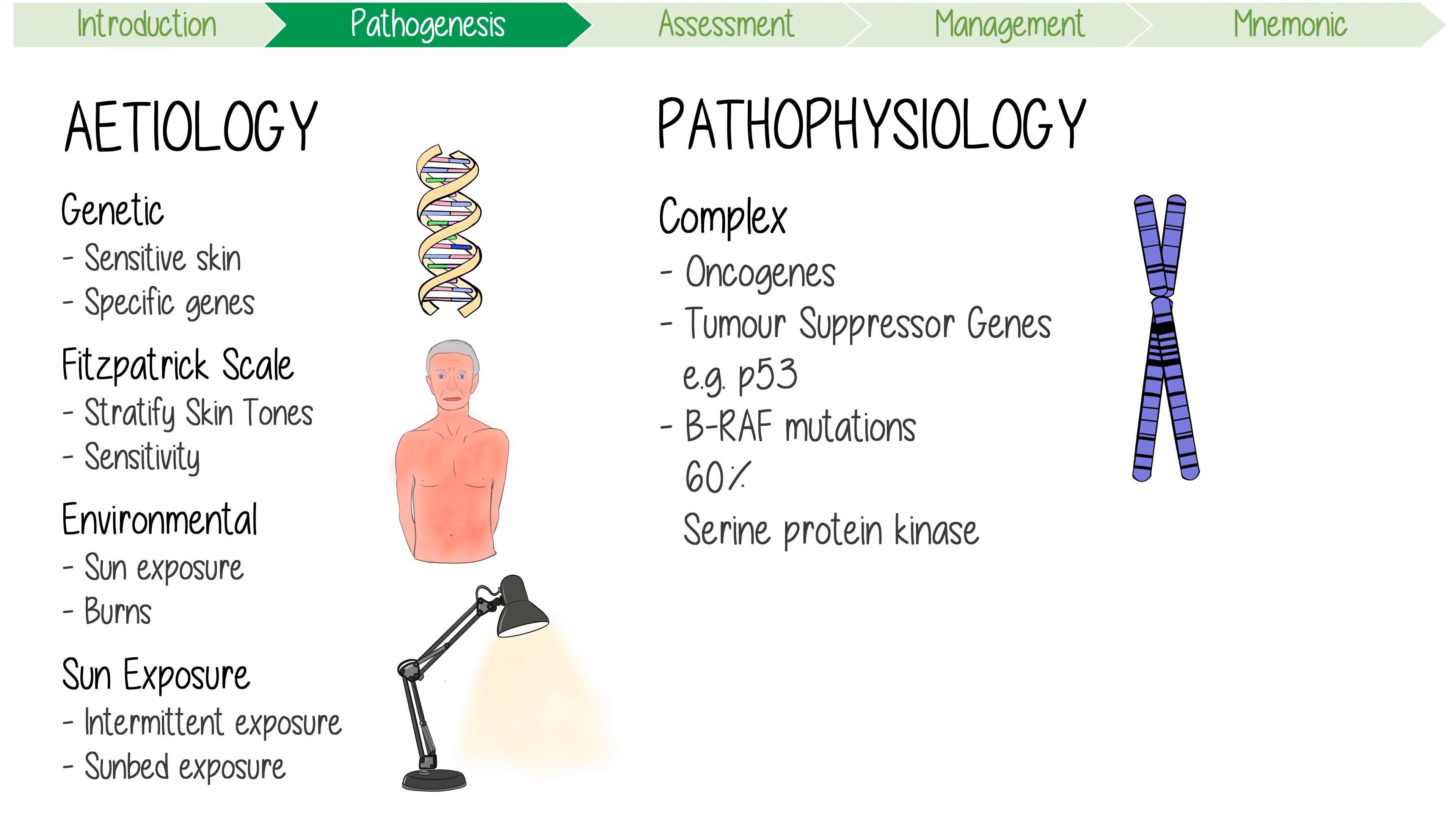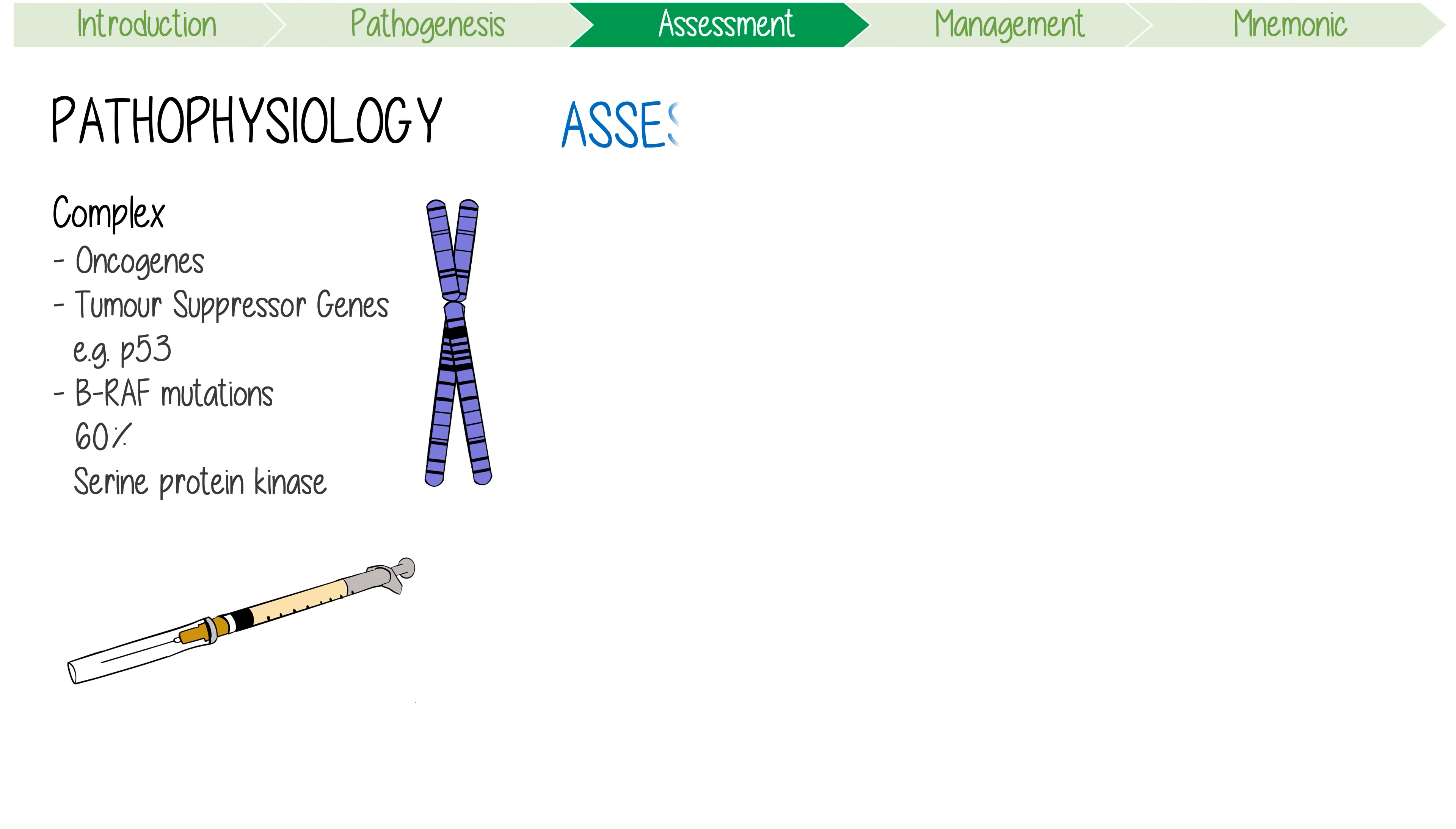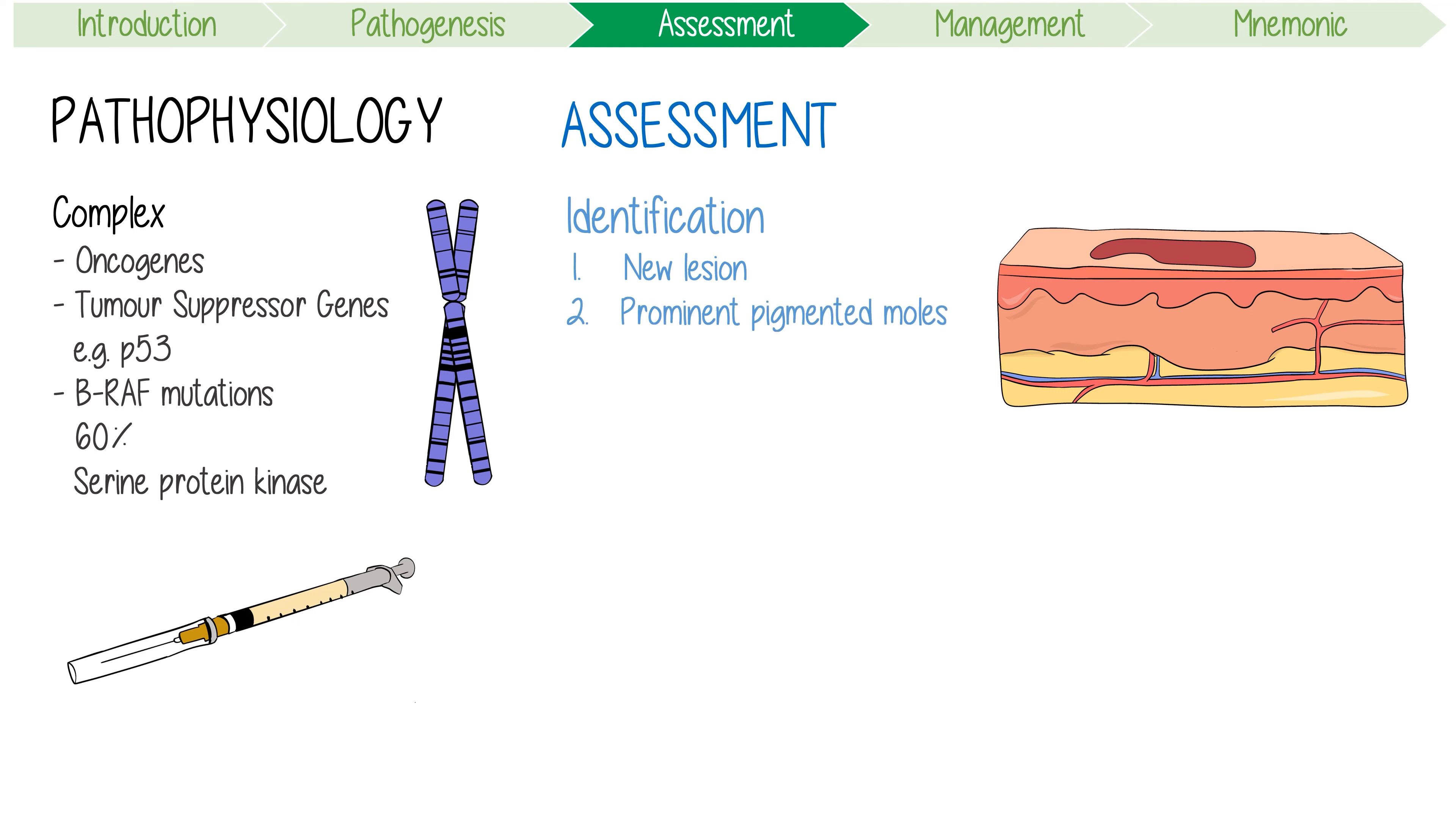Moving to its assessment, let's discuss a step-by-step approach. Firstly, suspicious lesions can be identified and screened quickly with three key warning signs: one, new lesions - most arise de novo rather than from a pre-existing mole; two, prominent pigmented moles that look like ugly ducklings; three, rapidly growing lesions.